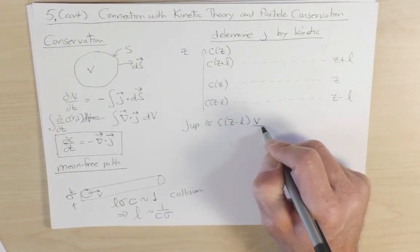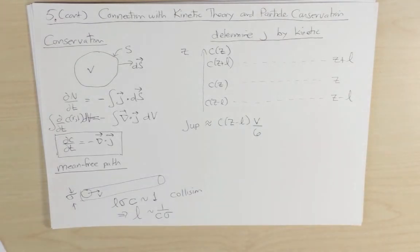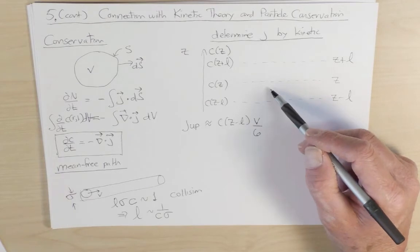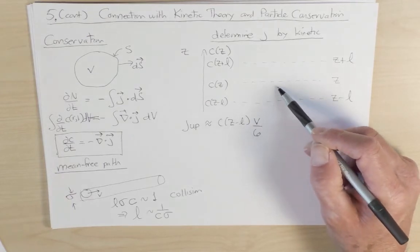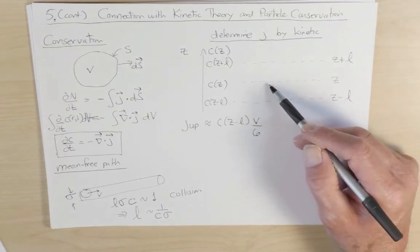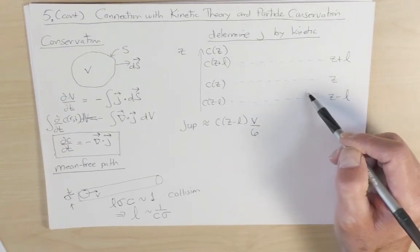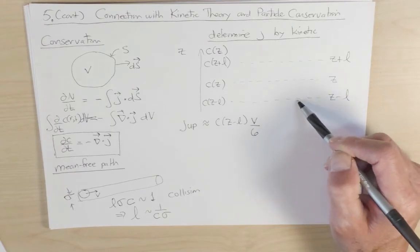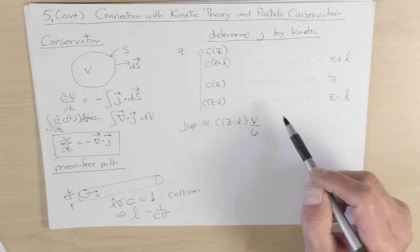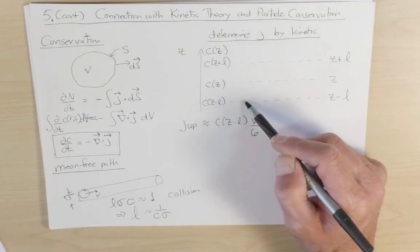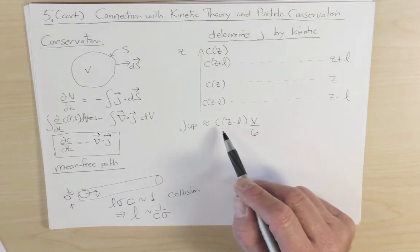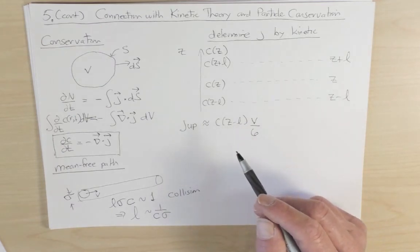So what I would argue is that for particles that are going to cross the plane z coming from below, I'm saying that everybody in a region that's one mean free path below z will pass a plane z without suffering a collision. And I'm replacing the varying concentration by the concentration at one mean free path below. And then the flux of up-going particles in a three-dimensional system, I'm arguing roughly speaking, that one-sixth of the particles are moving up,